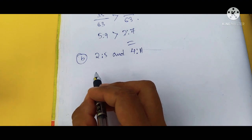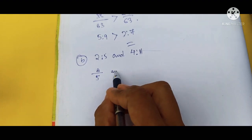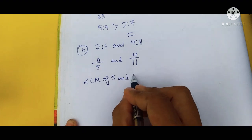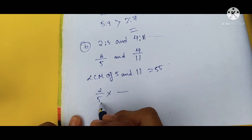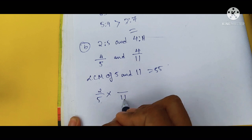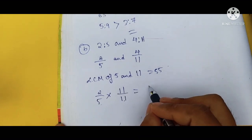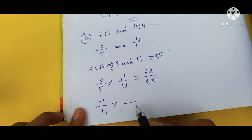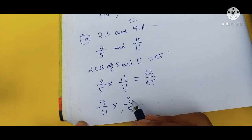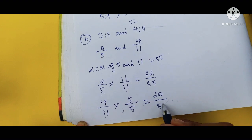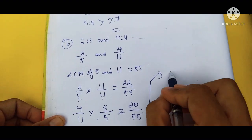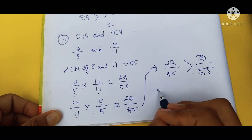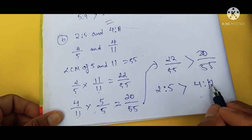Question 7B: compare 2 is to 5 and 4 is to 11. We make them into fractions: 2 by 5 and 4 by 11. The LCM of 5 and 11 is 55. Converting: 2 by 5 becomes 22 by 55 (multiplying by 11), and 4 by 11 becomes 20 by 55 (multiplying by 5). Since 22 by 55 is greater than 20 by 55, we conclude 2 is to 5 is greater than 4 is to 11.